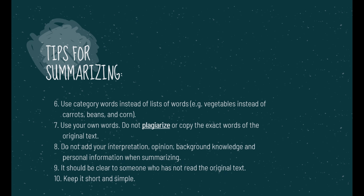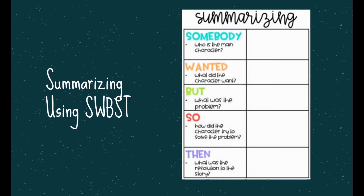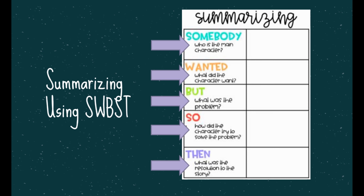Is there another technique in summarizing a story? Yes, there is. It's called summarizing using SWBST. S stands for Somebody — who is the main character in the story? W stands for Wanting — what did the character want? B stands for But — what was the problem? S stands for So — how did the character try to solve the problem? T stands for Then — what was the resolution to the story?